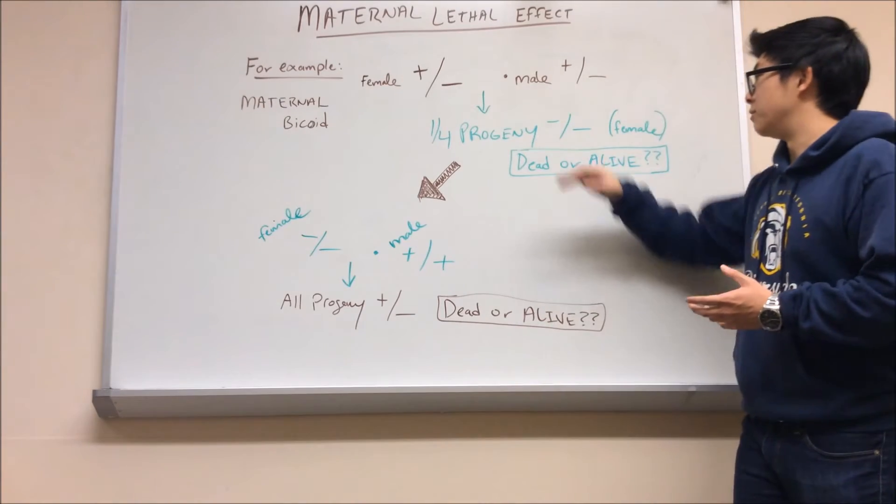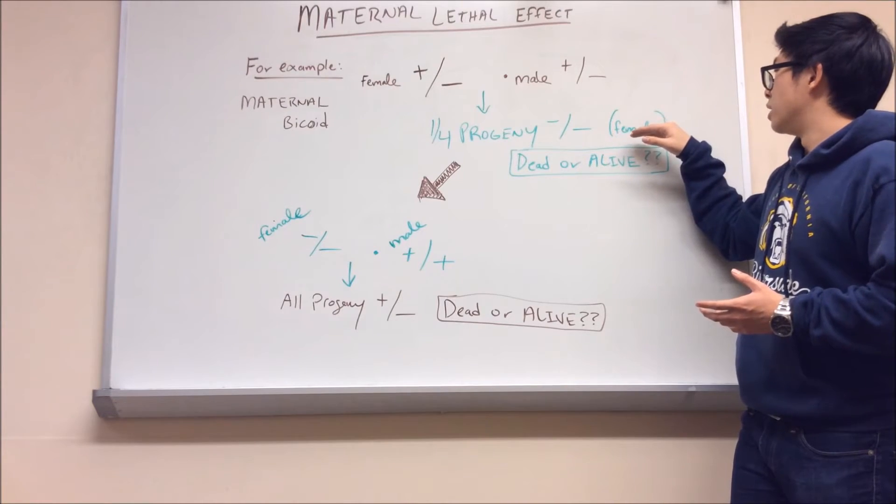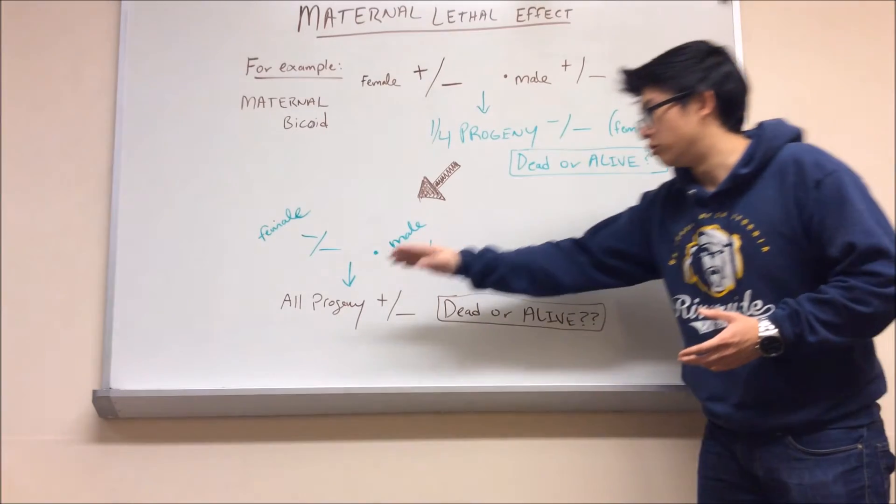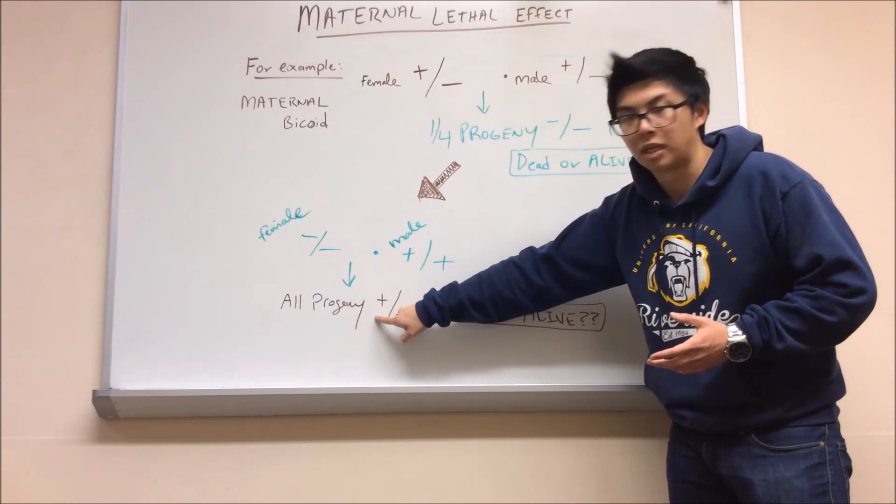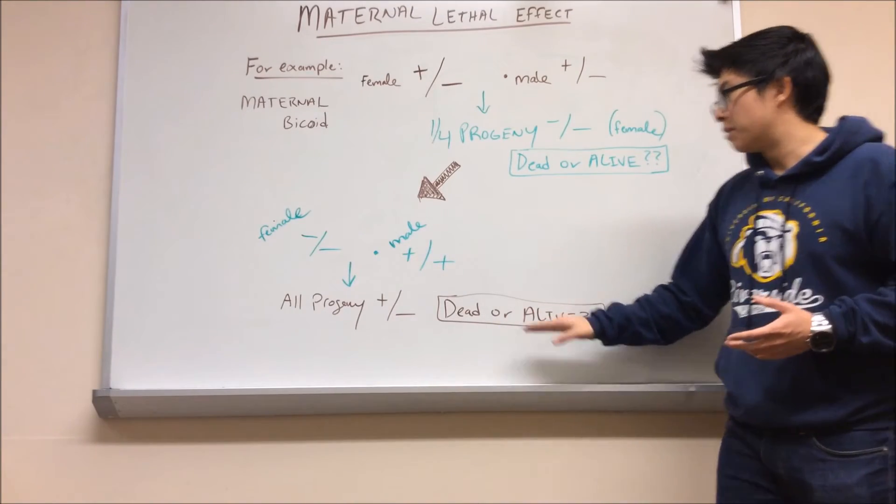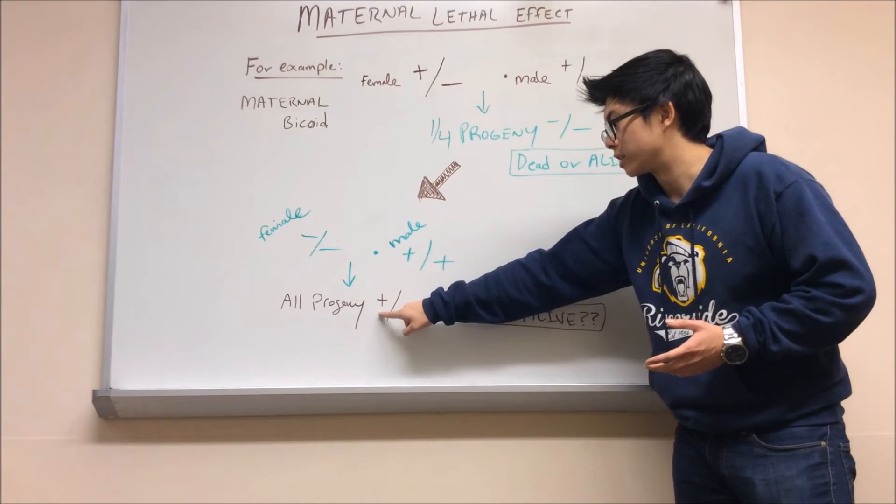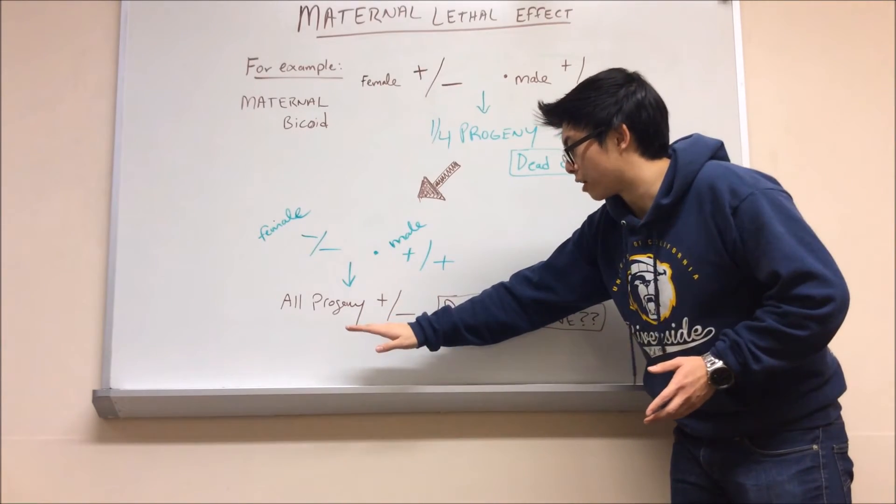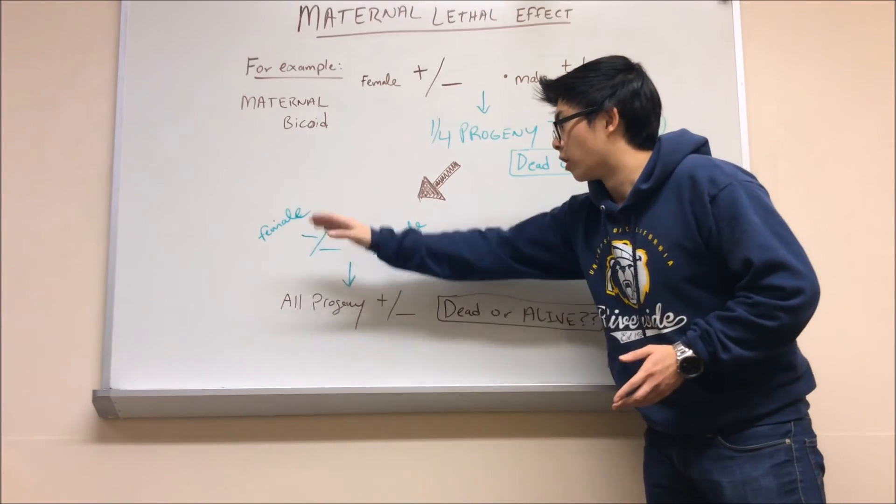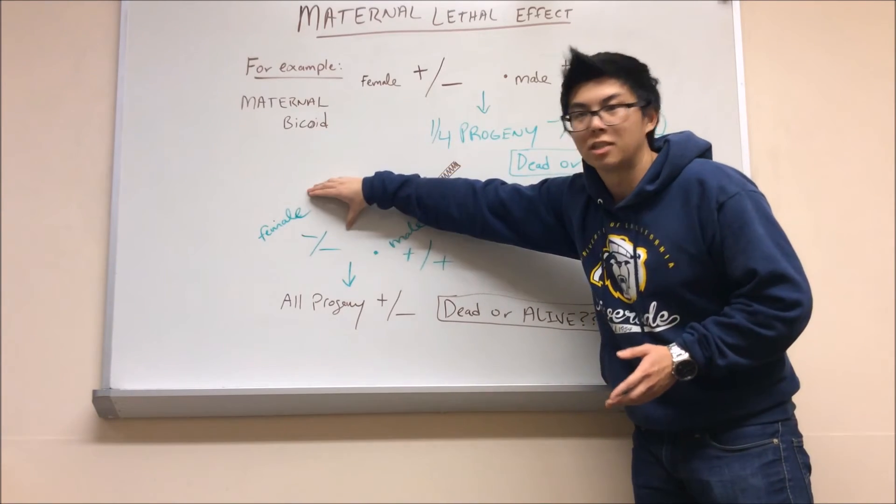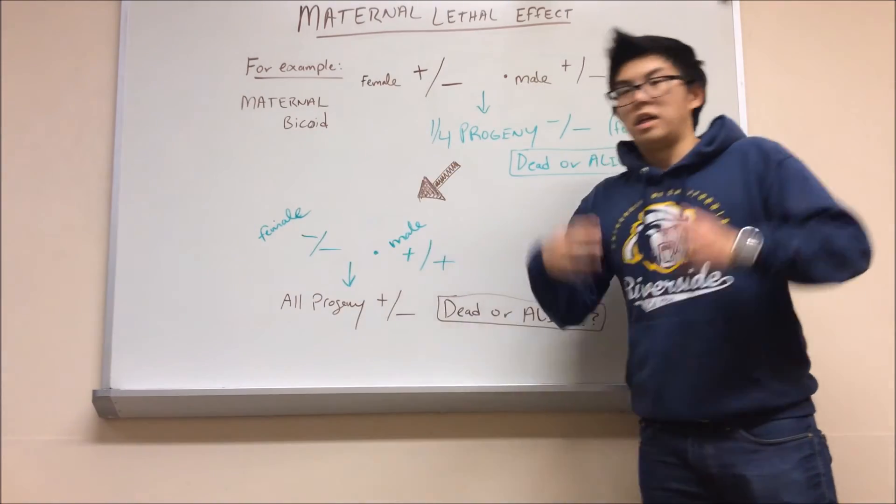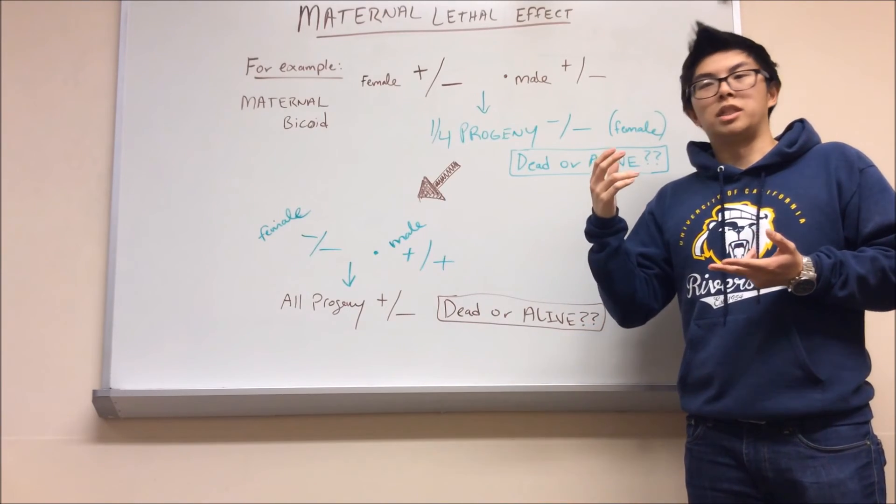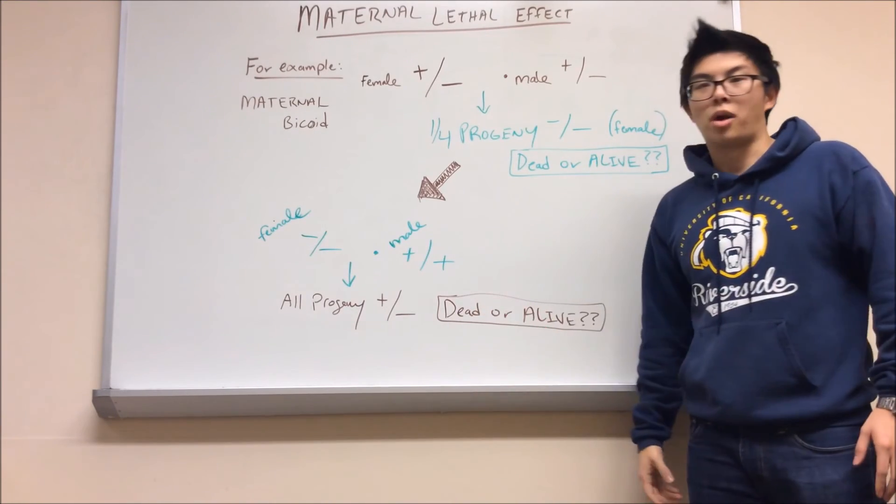To further extend on that though, if you took this embryo and you assume that it was a female and you cross it with a male that has two wild type copies of the Bicoid gene, you end up with all progeny that have one wild type Bicoid gene. Some people say these progeny are going to be alive because they have this wild type Bicoid gene. Again, that's a misconception. This is a maternal lethal effect which means it doesn't matter what the genotype of these progeny are. All that matters is that this mother does not have a single wild type copy of the Bicoid gene. It cannot make proper Bicoid mRNA to deposit into these progeny. So these progeny die, they end up potentially with two telsons and that's improper development.